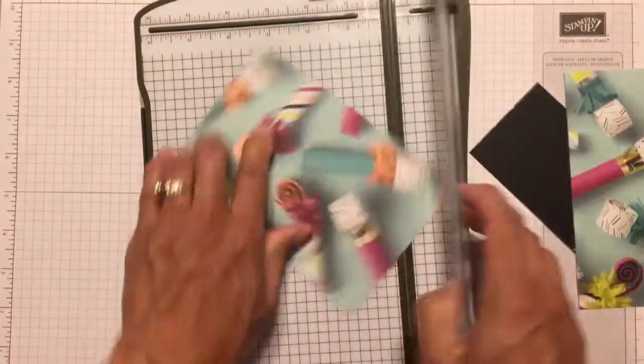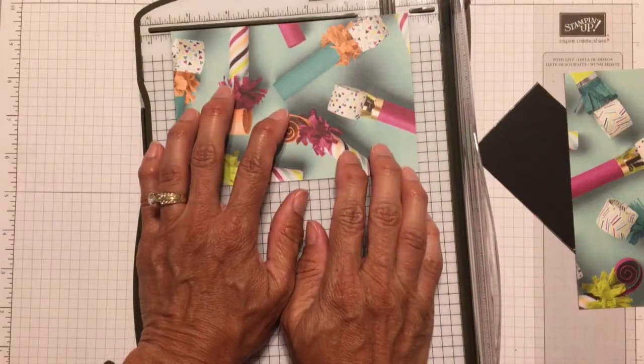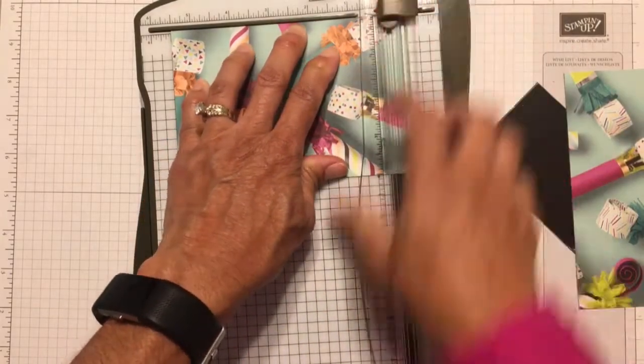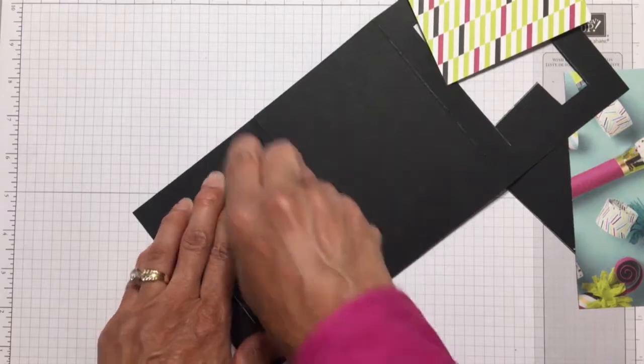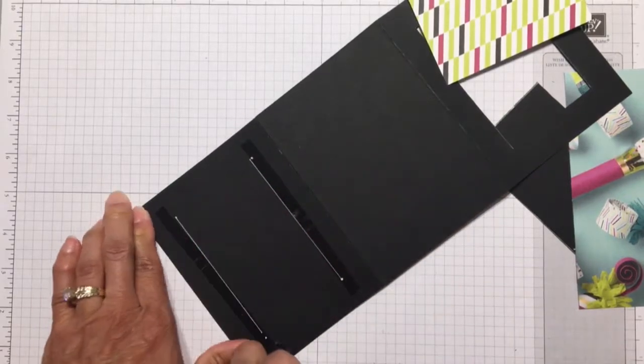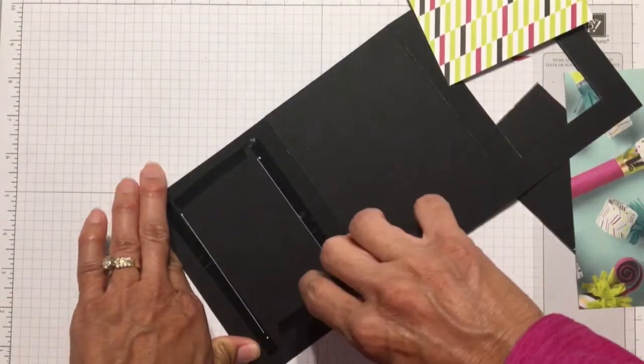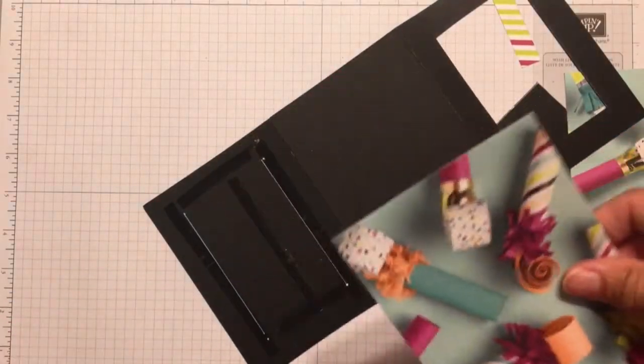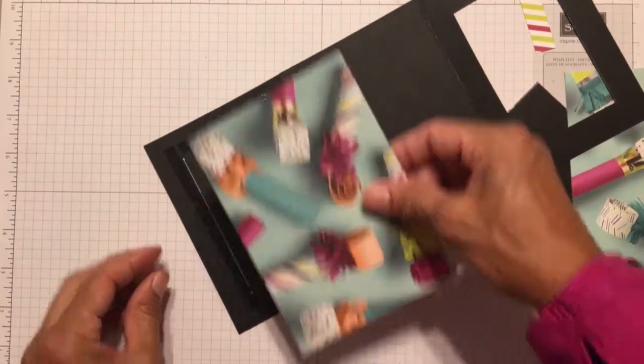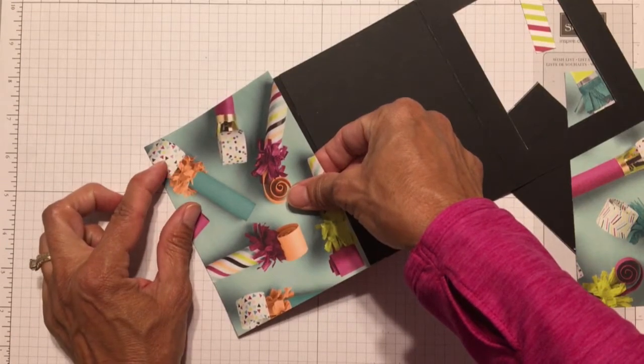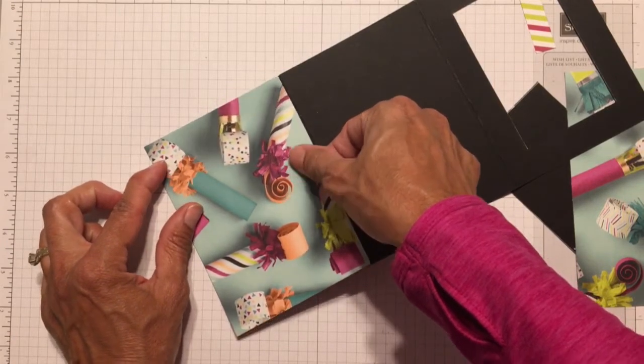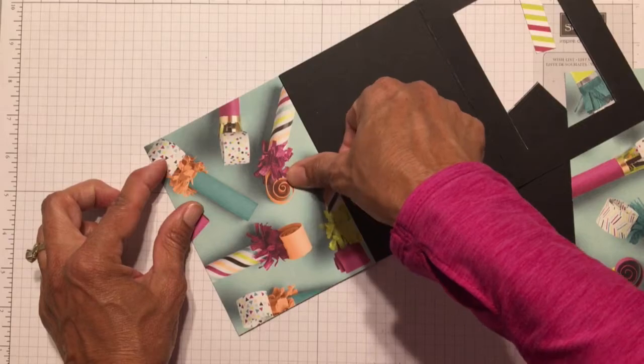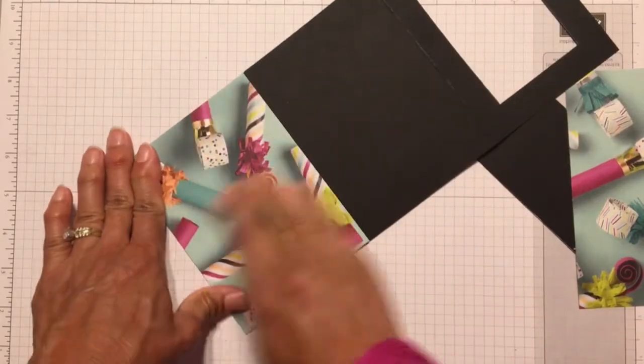I'm trimming the designer series paper that I picked to 4 inches by 5.5 inches. And then I'm just going to use some fast fuse to attach it to the panel of the card that is going to be seen right behind my window. I like to align my paper to the outer edge of the card just because it is easier to see. And then I just make sure that an adjacent side is also lined up. And then I press the paper down.